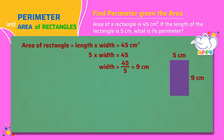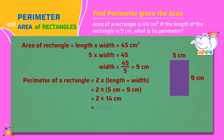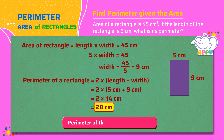Now that we know the length and width, we can use the formula to find the perimeter of the rectangle, which is 2 times length plus width. Perimeter equals 2 times 5 centimeters plus 9 centimeters, equals 2 times 14 centimeters, which is equal to 28 centimeters. The perimeter of the rectangle is 28 centimeters.